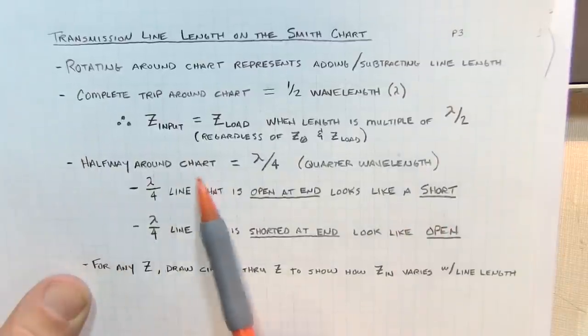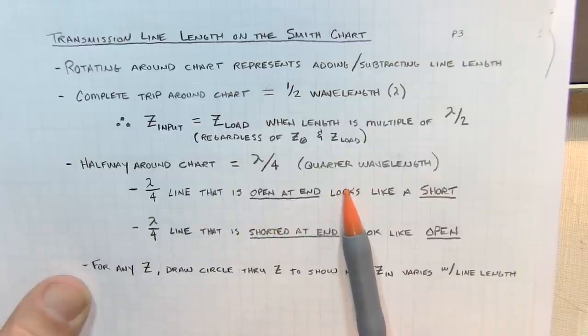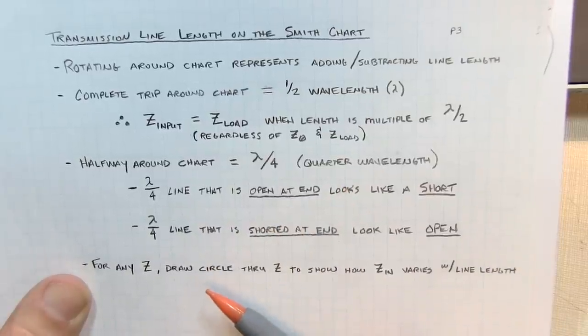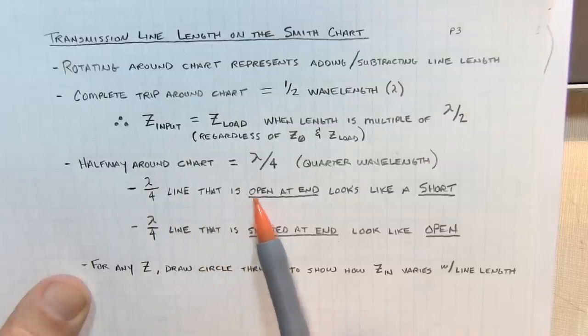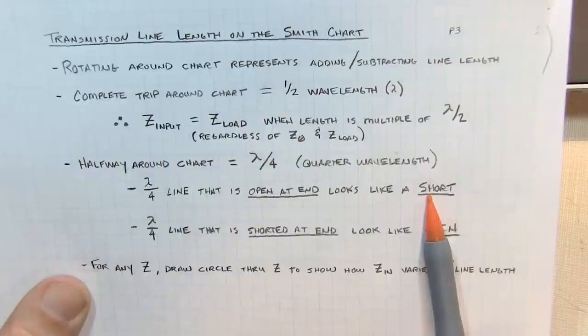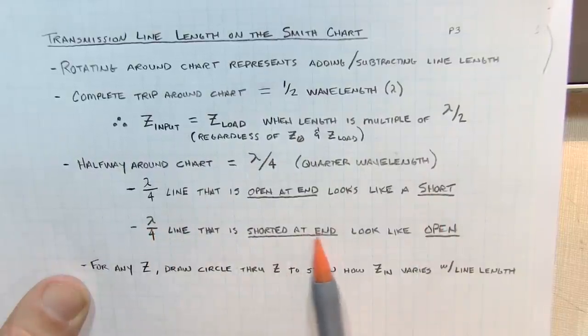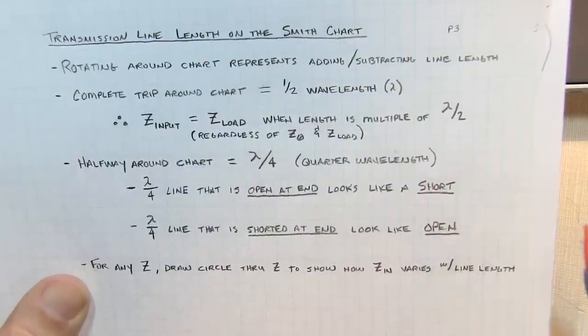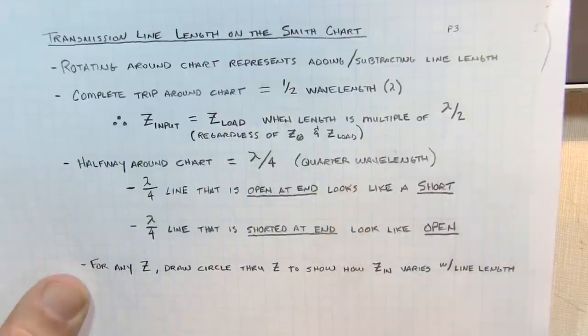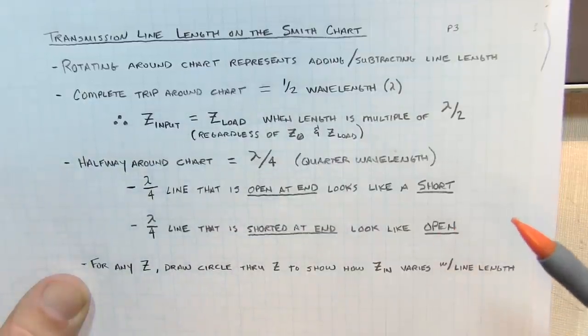Halfway around the chart represents a quarter wavelength line, which is special because it does interesting impedance transformations. A quarter wavelength line that is open at the far end will look like a short at the near end, and vice versa. A quarter wavelength line shorted at the far end looks like an open at the near end. This is used for quarter wave transmission line transformers, which we'll talk about in a future video.